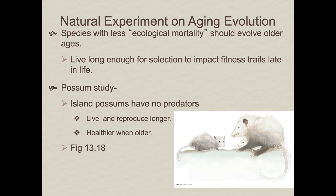Returning to possums: populations facing less ecological mortality — fewer predators — may live long enough for selection to impact fitness-related traits later in life. Steve Austad of Yale University studied mainland versus island possum populations. Island possums faced no predators and thus less ecological mortality; they lived longer and reproduced longer. This also led to selection to keep them healthier when older, because staying healthier later in life means better reproductive success. The linkage between health and the potential to breed late in life is what drives those selection pressures.